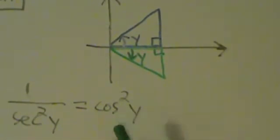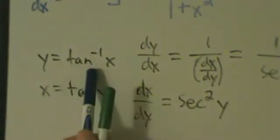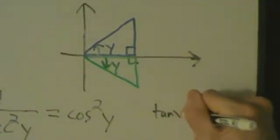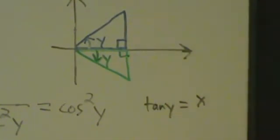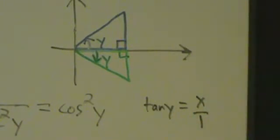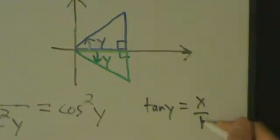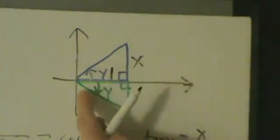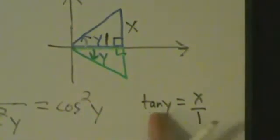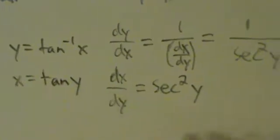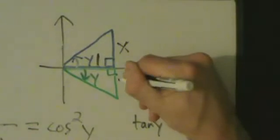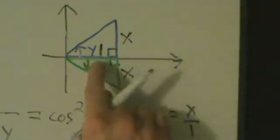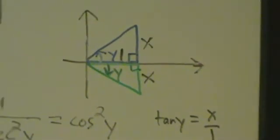Now we've got to figure out cosine squared of y, and to do that we need to know something else about y. Luckily we do: y equals inverse tangent of x, or equivalently x equals tangent of y. So tangent of y equals x, which is x over 1. Since tangent is opposite over adjacent, in the upper triangle opposite is x and adjacent is 1. In the lower triangle it's the same: opposite is x and adjacent is 1.